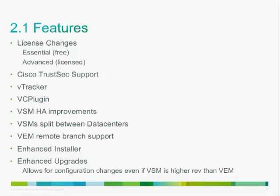The 2.1 HA improvements now support VSMs split between different data centers. There's also VEM remote branch support, so a VEM module on an ESX host at a remote branch can connect to a VSM in the data center with up to 100 milliseconds of latency. The installer and upgrade process were also greatly enhanced in 2.1. It's well worth upgrading to this version.